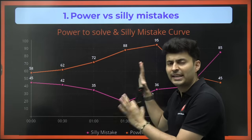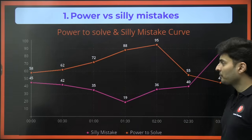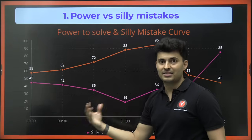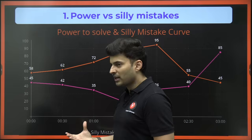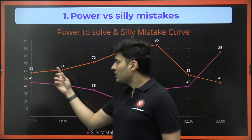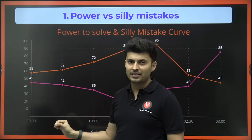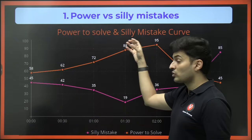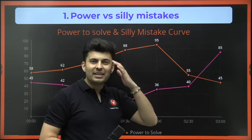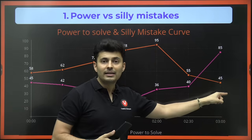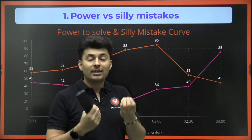Now I'm going to show you a very interesting graph which you've never seen before. The orange line is the power to solve a question versus time, and the pink line is basically your silly mistakes versus time. Initially, when you enter the hall and start the paper, you're just warming up — you have some hesitation and nervousness, so your brain is not functioning fully. As you get used to the environment, your ability to solve questions increases and chances of making mistakes decreases. As you go towards the end, your brain gets tired and nervous, so your ability decreases.